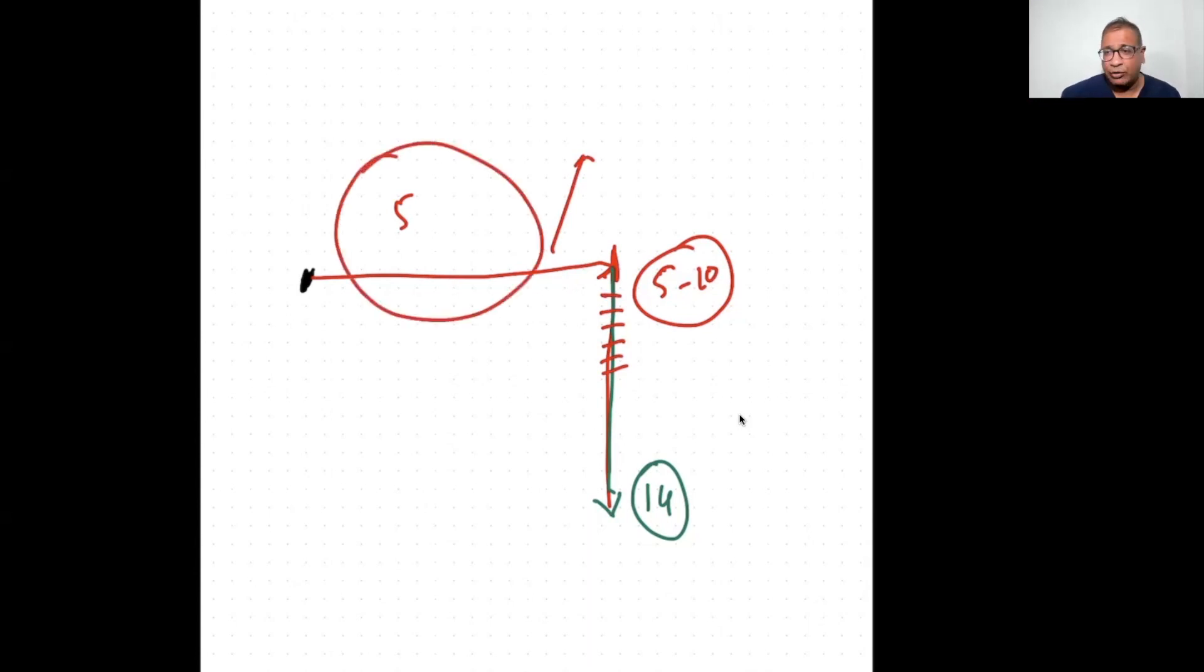You correct that by increasing estrogen levels faster. In the first five days, how do you increase estrogen levels? You increase estrogen levels by giving FSH, clomiphene, and both of these, what they do is they cause multifollicular growth, and that increases your estrogen levels. And that's a simple way of correcting it.